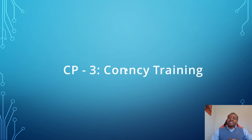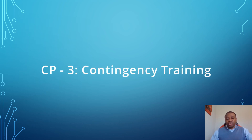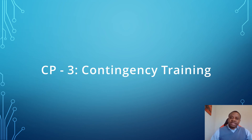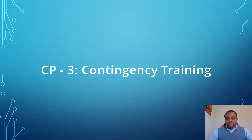Moving on to CP3, which is contingency training. The CP3 control seeks to identify the training that is accomplished for information system users with assigned roles and responsibilities. It also seeks to identify how system users with contingency plan roles and responsibilities receive that training. As evidence to justify that CP3 is implemented on the information system, we can request a copy of the contingency plan and a copy of the contingency plan training records.